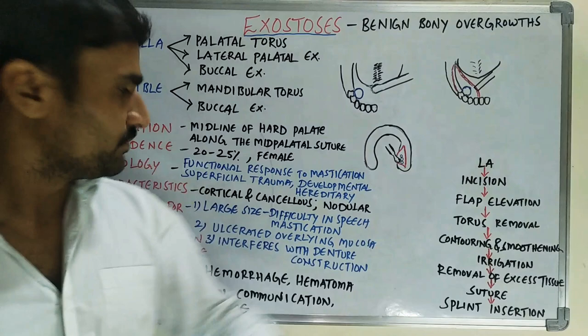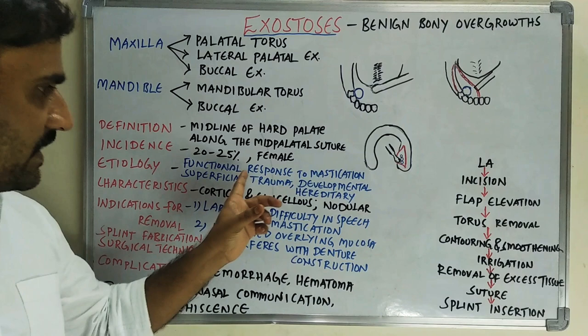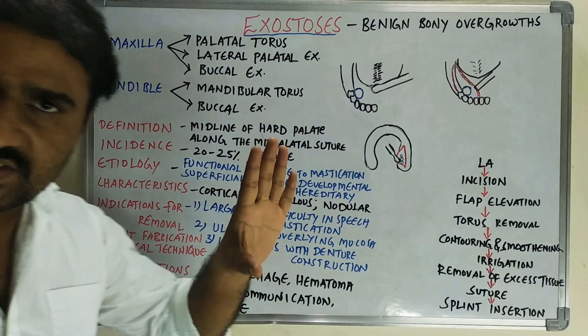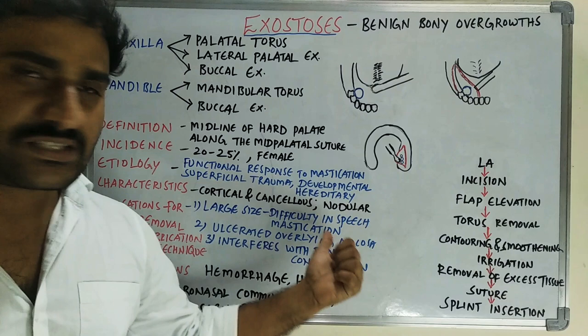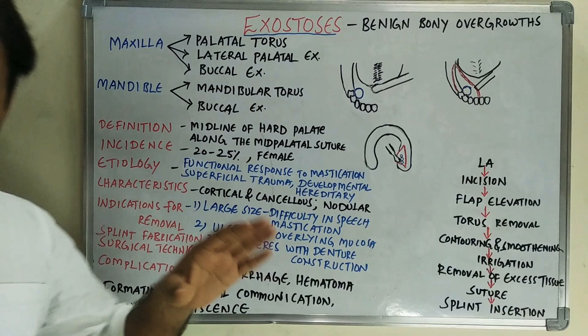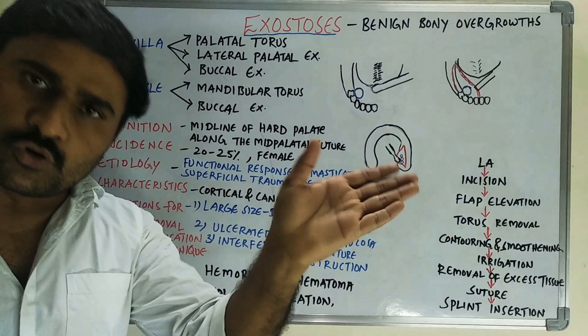The etiology is the same as palatal torus — functional response, superficial trauma, and developmental factors. Characteristics are also the same: it contains cortical bone and cancellous bone. Indications for removal are the same: large enough to interfere with speech and mastication, ulcerated mucosa, or interference with denture construction. Splint fabrication is also the same — take the mandibular impression and pour the cast.